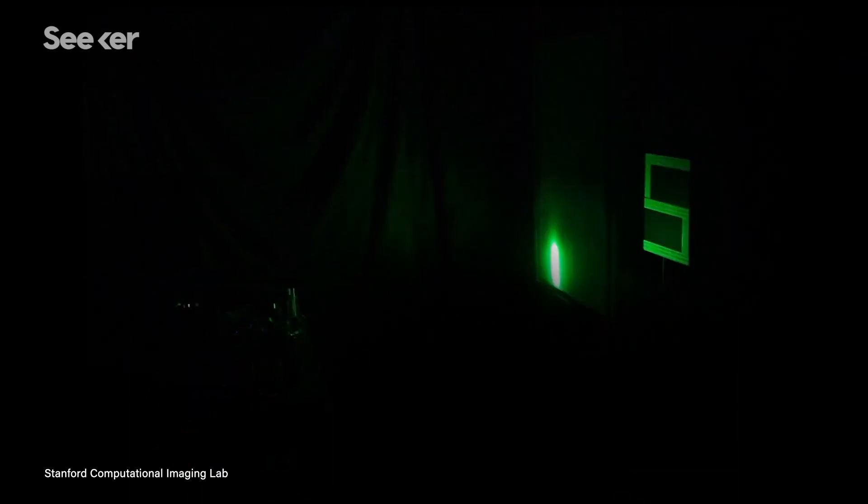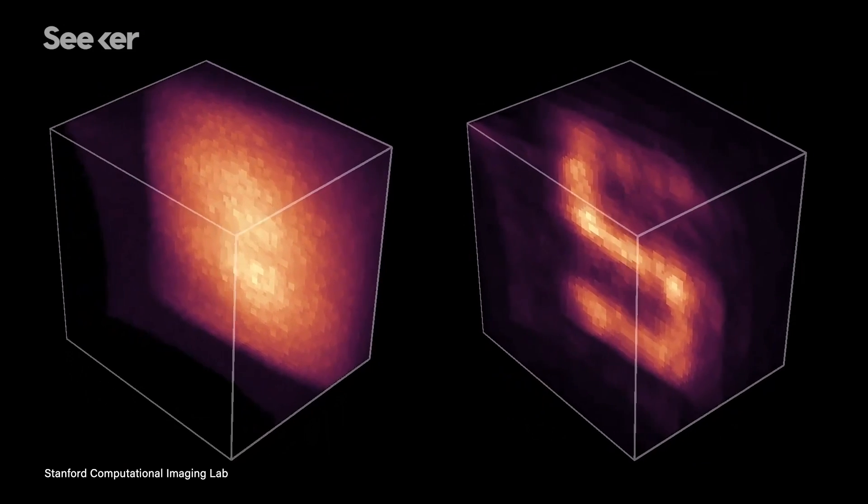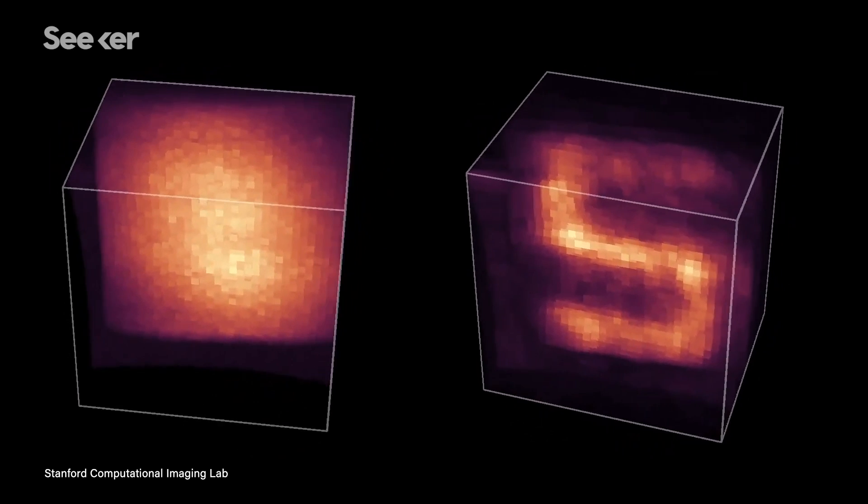From here, the light diffuses through the foam and onto the surface of your target object on the opposite side. The light from the laser then bounces off the surface of the object and diffuses once again back through the foam and returns to the original point the laser was illuminated.